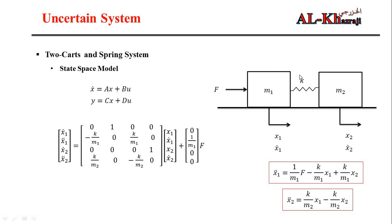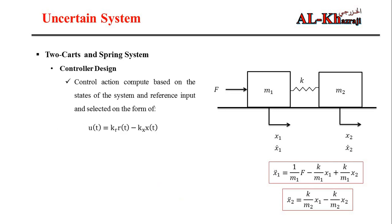To find C: since we are interested in controlling x2, C = [0, 0, 1, 0], because we are not interested in x1, x1_dot, or x2_dot. That completes the state space model. The state feedback control law is u = kr*r - kx*x, where kr is the forward gain (scalar), r is the reference input, and kx is the feedback gain vector.